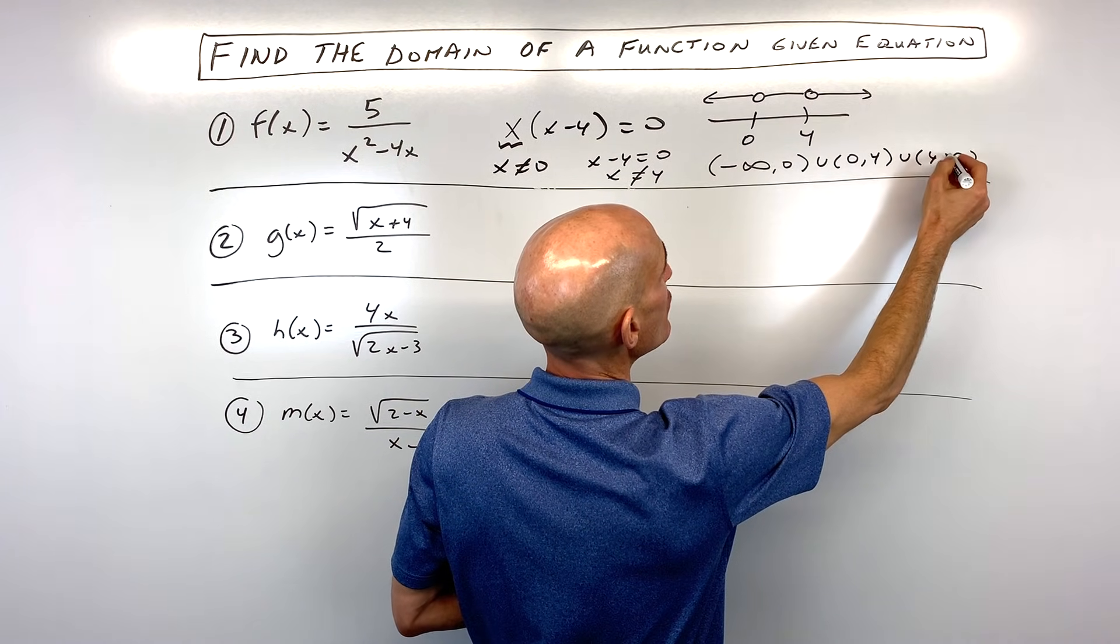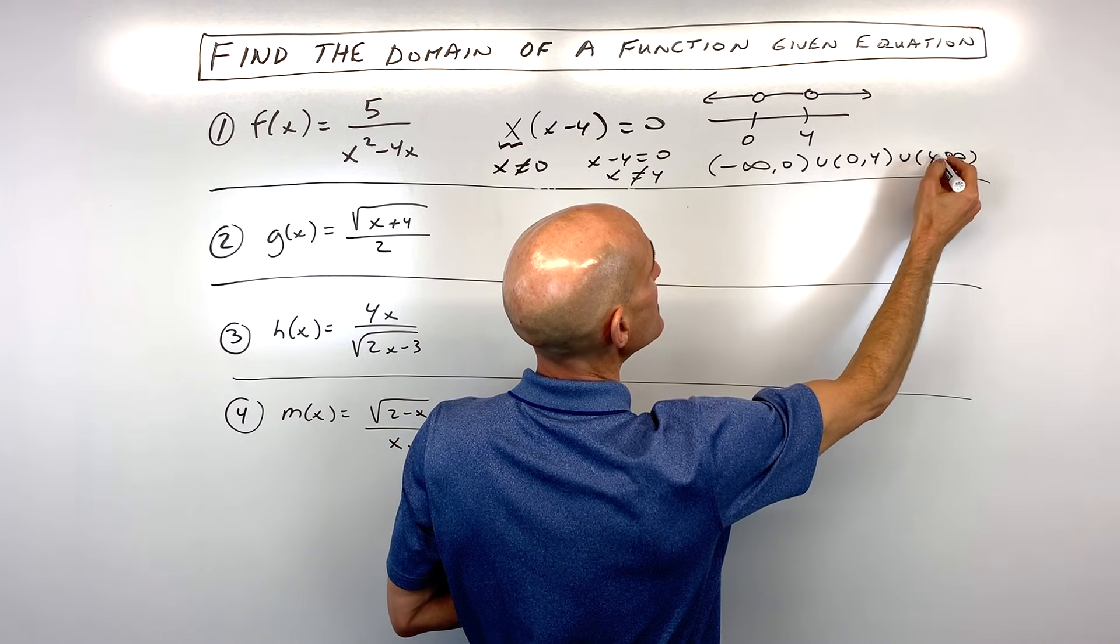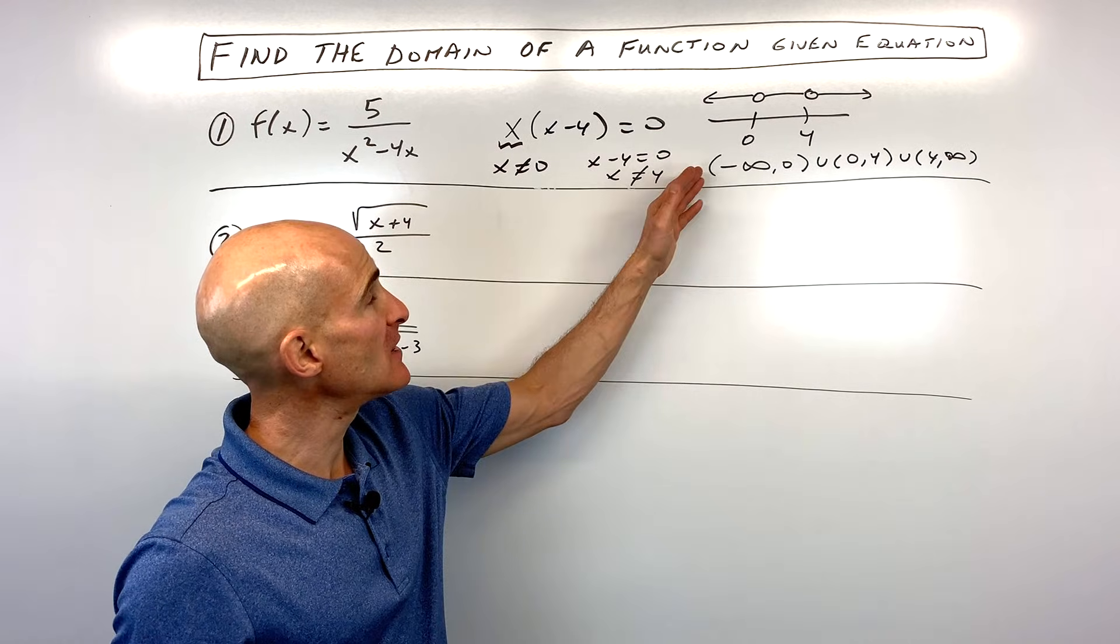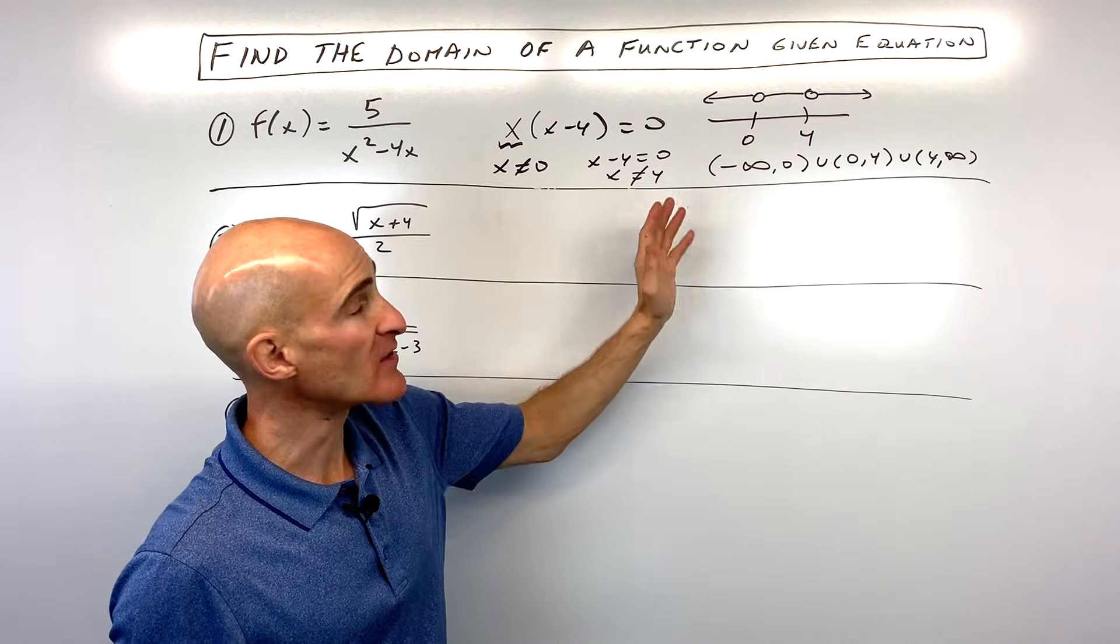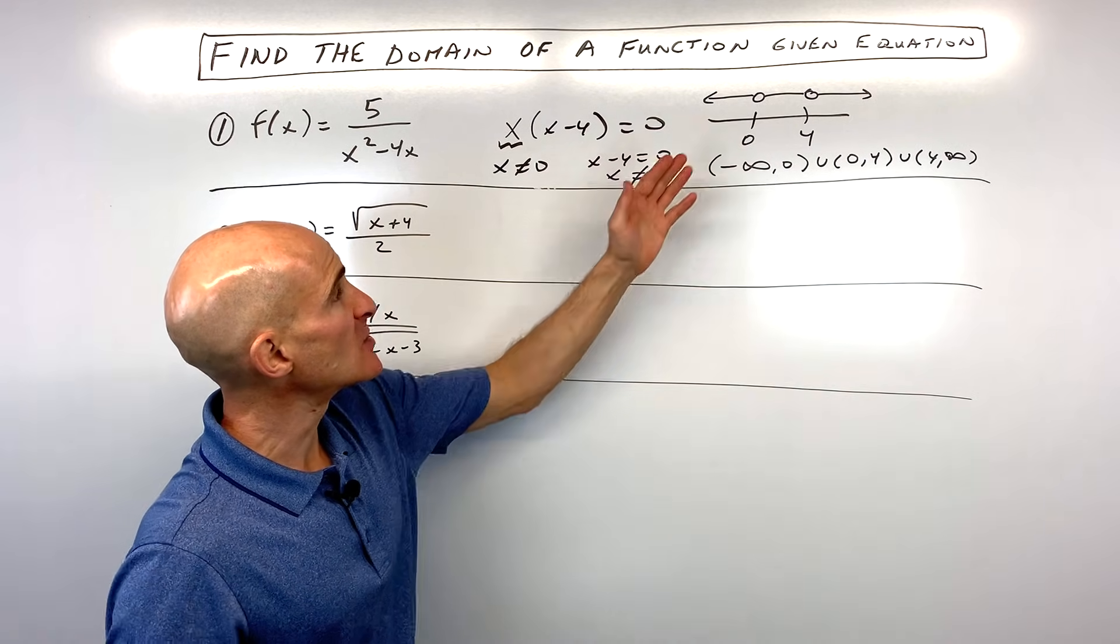And notice I'm using the parentheses because it doesn't include those values. Infinity, you can never reach infinity. This is always like an open, use the parentheses, an open interval. So that's the domain for number one.